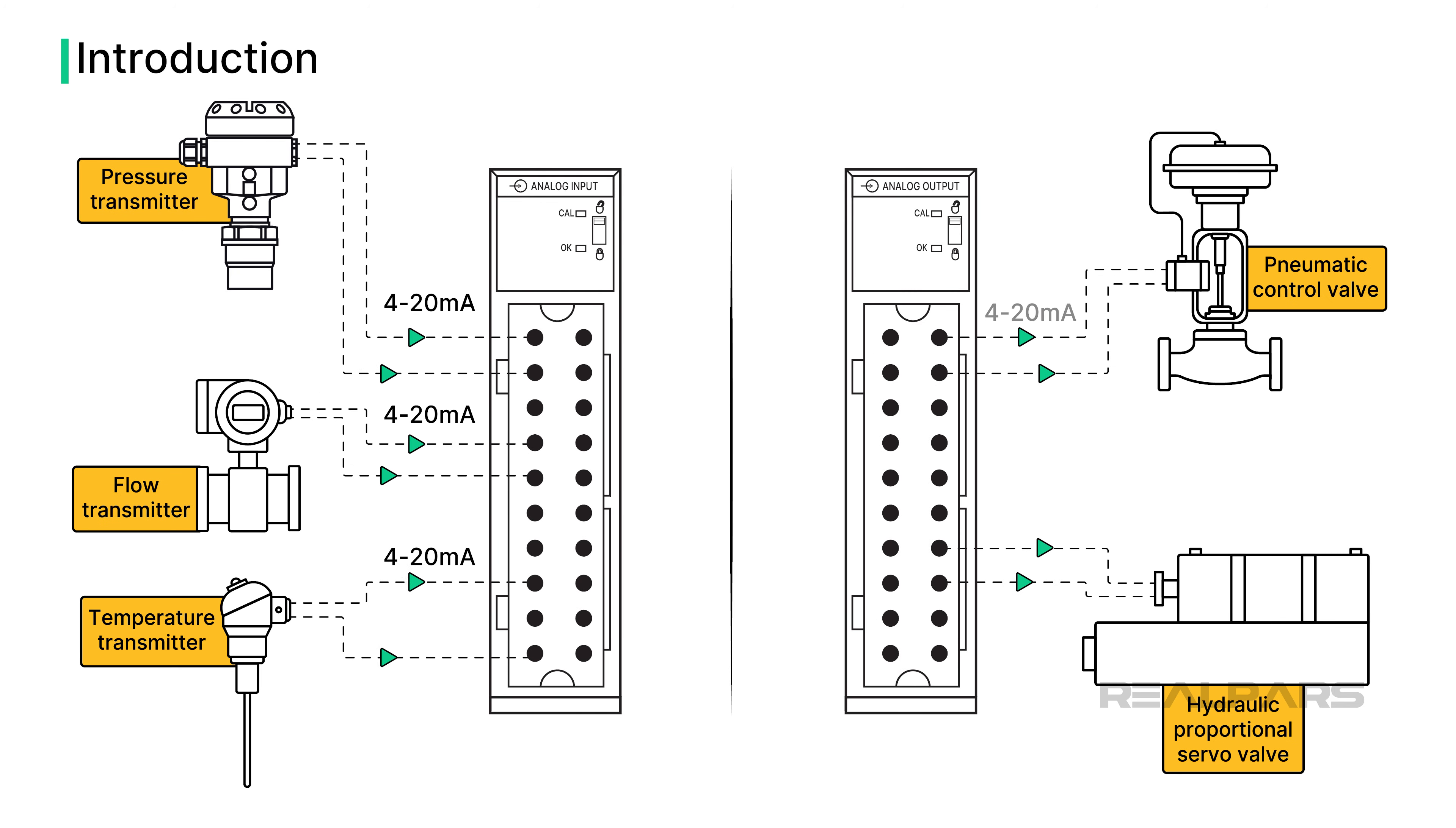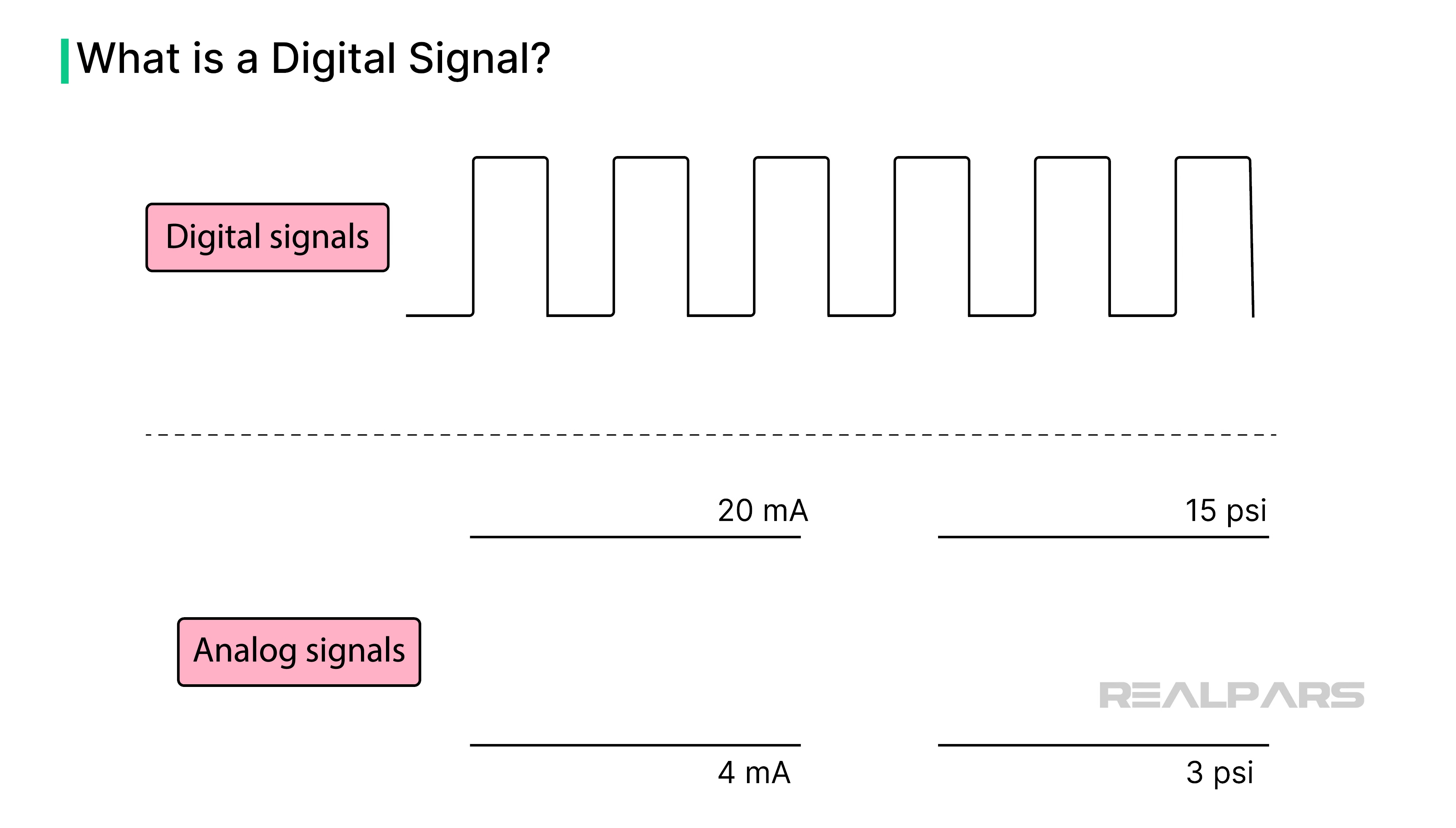In this video, we will discuss the different types of analog input and output field devices and associated signal conditioning often used. To begin with, let's discuss the difference between a digital signal and an analog signal.